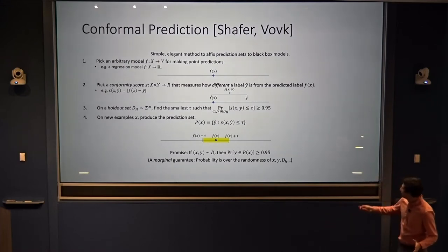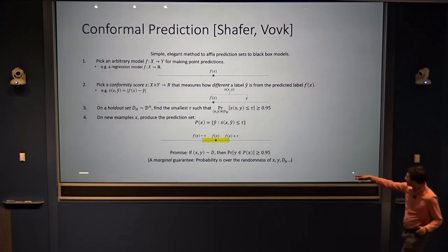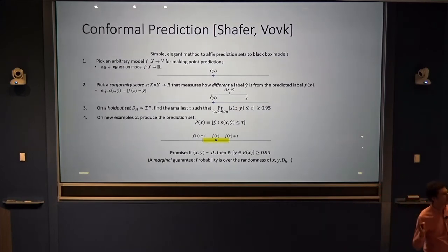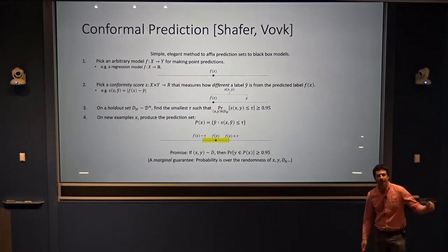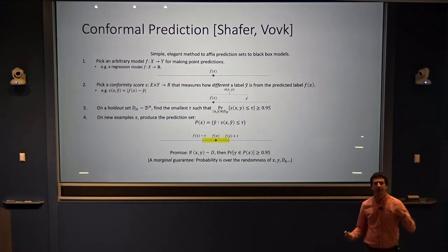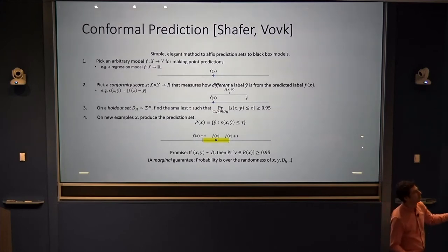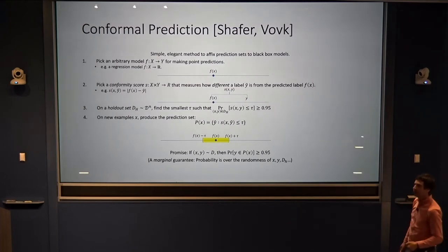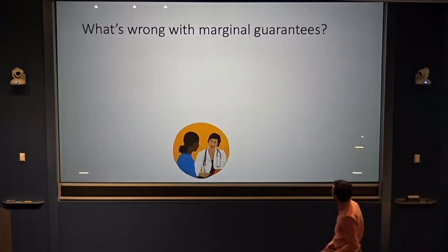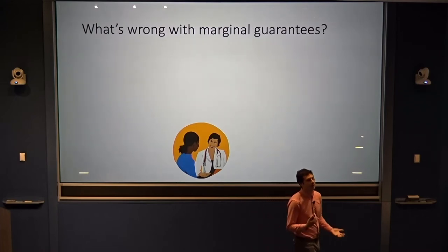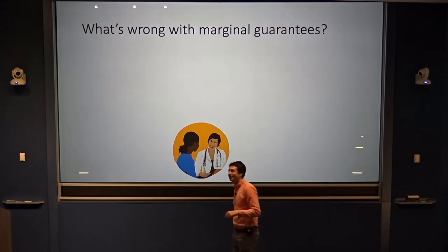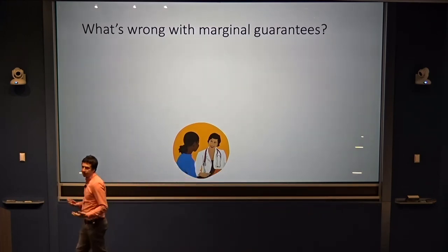This is what's called a marginal guarantee, and the probability statement is really over everything — over the label, the randomness of x (the patient who walked into my office), and the randomness of the holdout set. I said I was going to critique conformal prediction — and it is an awesome technique — but what's wrong with marginal guarantees?